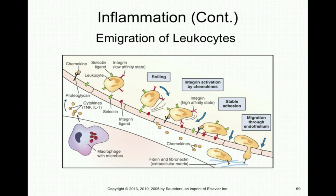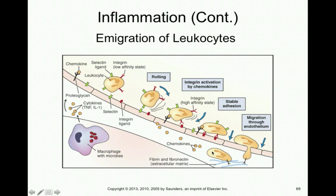During emigration and margination, cytokines released by activated macrophages travel to the blood vessel wall and activate a series of receptors that allow leukocytes to roll across the vessel wall and stick to those activated receptors. Once stuck, the blood cell squeezes through between cells — a process called diapedesis — and enters the infected or inflamed tissue. Once there, it attaches to the extracellular matrix and moves through the tissue to find microorganisms or dead cells to remove.